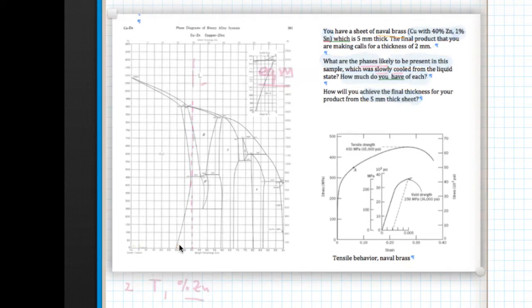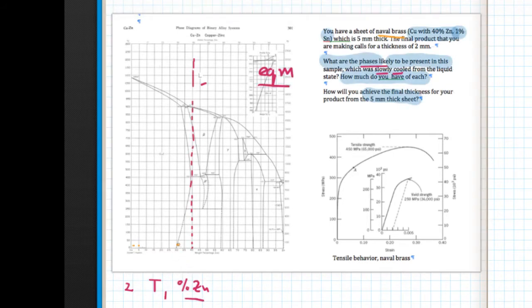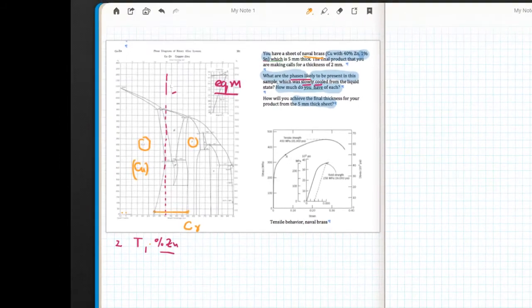And so we draw our tie line across this two phase region right here, straight across. And you can see that at the endpoints, as you recall, the endpoints tell you the composition of the individual phases. So this endpoint runs into the copper. You can't see this, but it's the copper solid solution. That's one phase. And this phase is gamma.